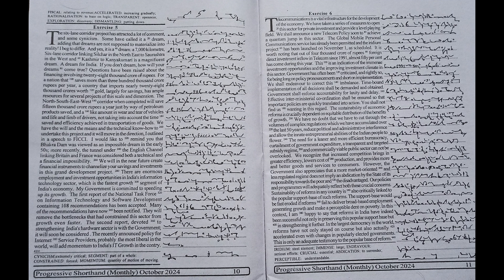The sustainability of economic reforms is crucially dependent on equitable distribution of the benefits of growth. We have no doubt that we have to cut through the volumes of complex regulations which we have accumulated over the last 50 years, reduce political and administrative interference, and allow the innate entrepreneurial abilities of the Indian people to flower. The need for a leaner and more efficient bureaucracy, curtailment of government expenditure, a transparent and targeted subsidy regime, and commercially viable public sector cannot be overlooked.